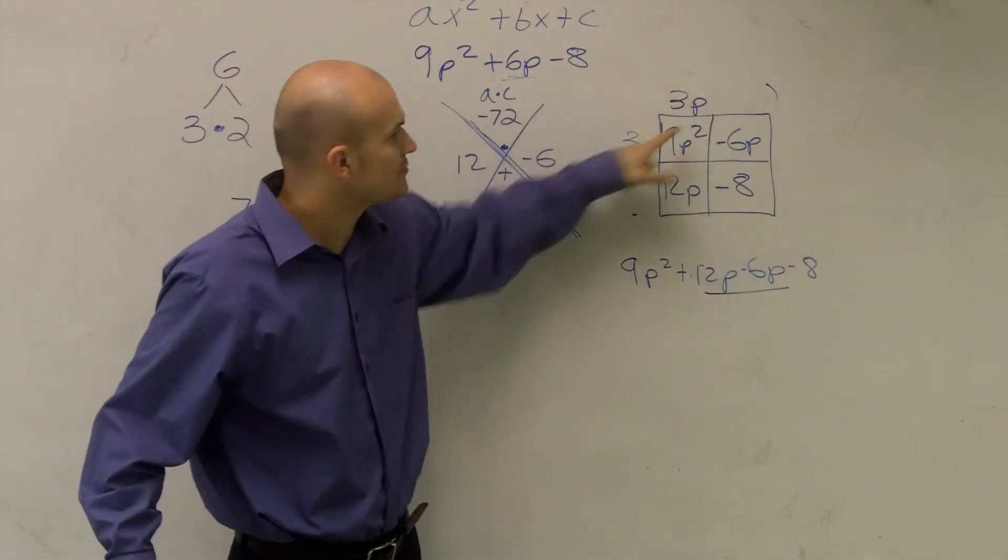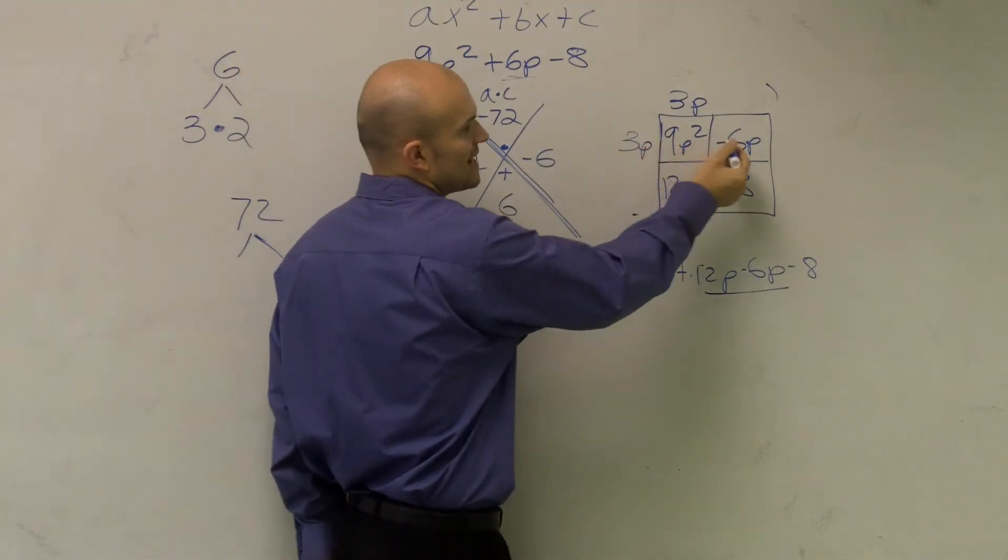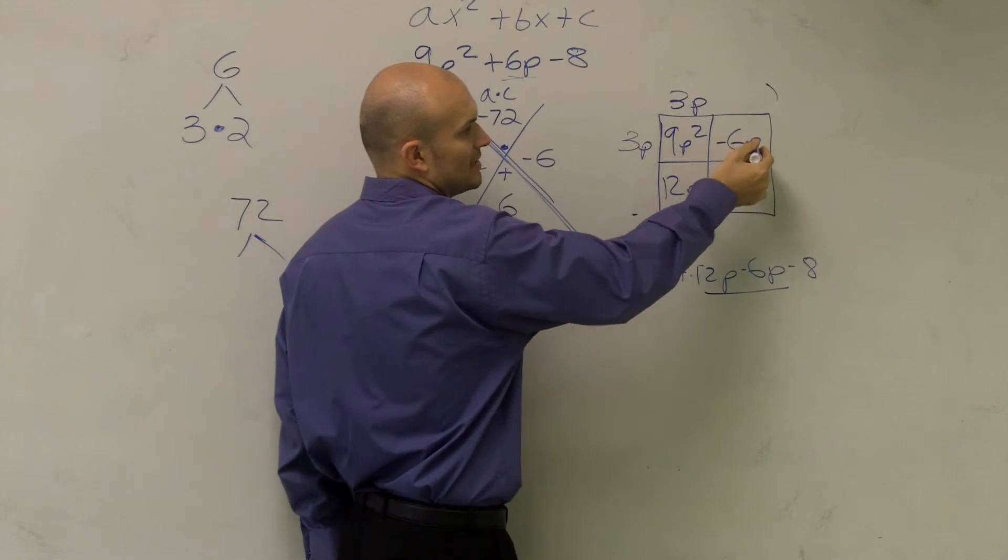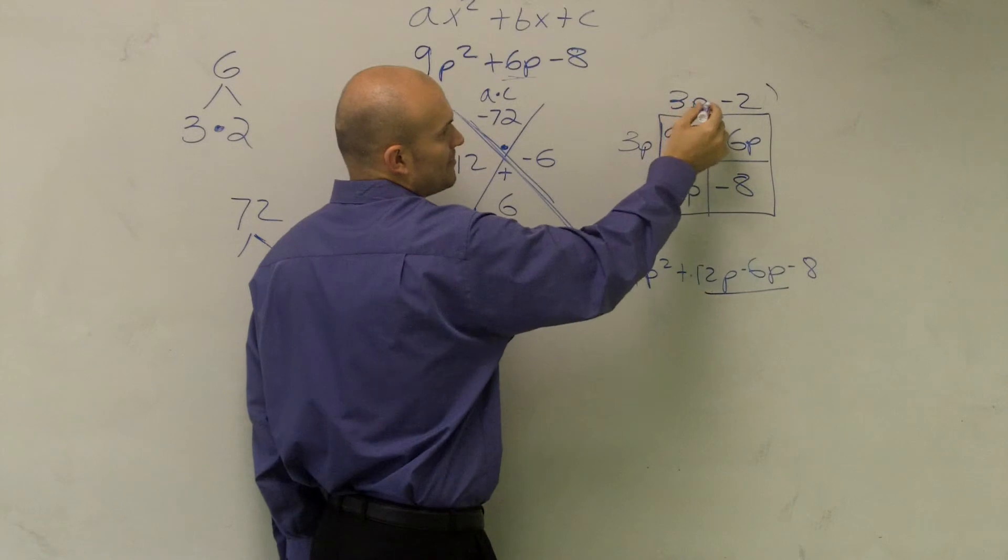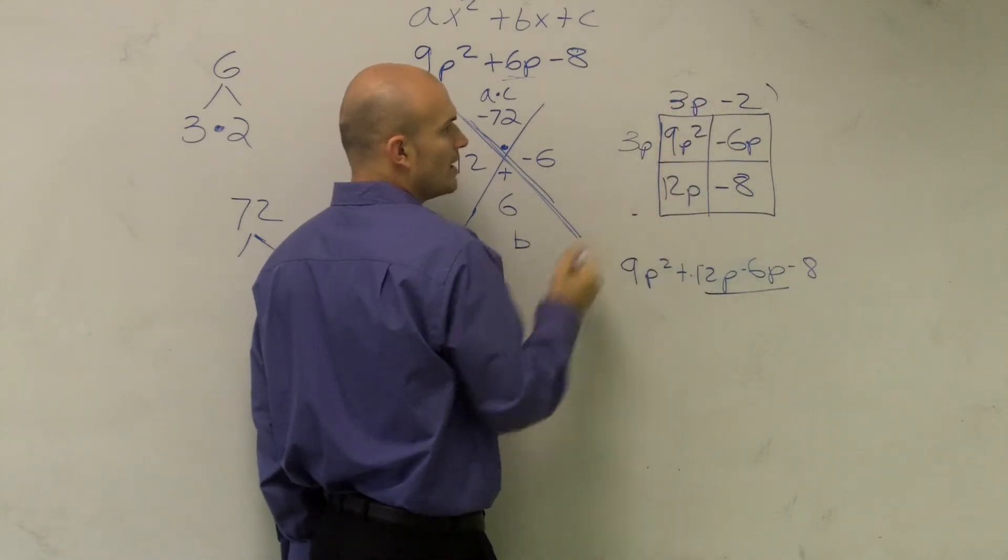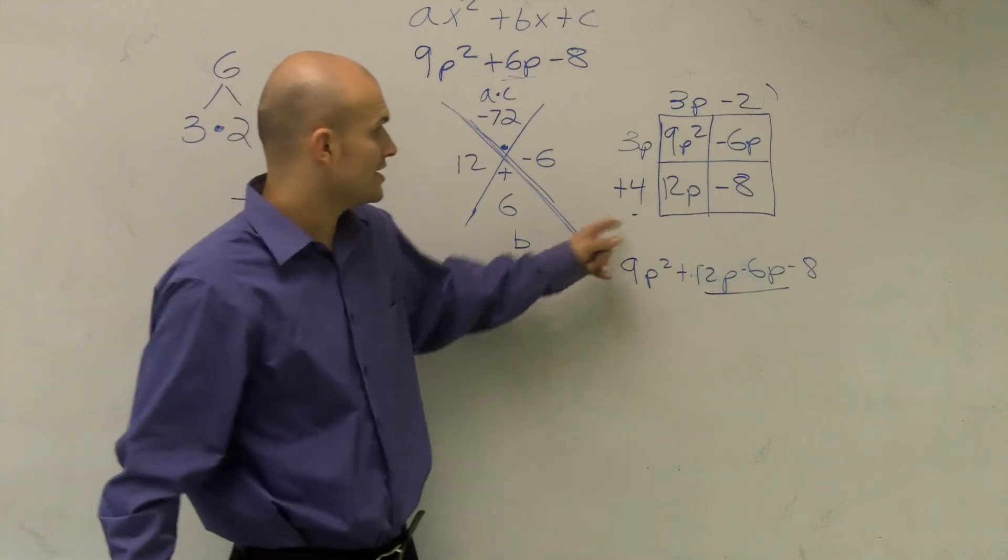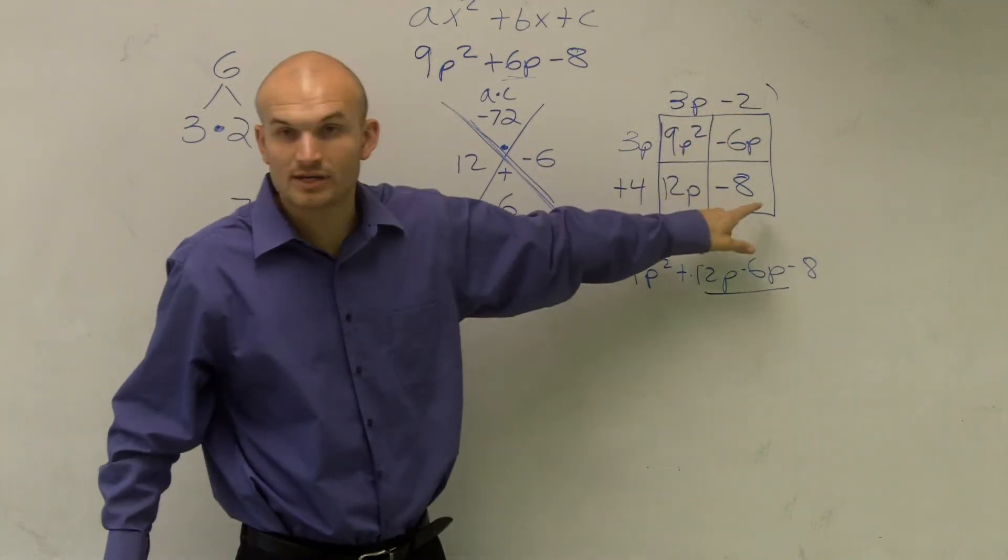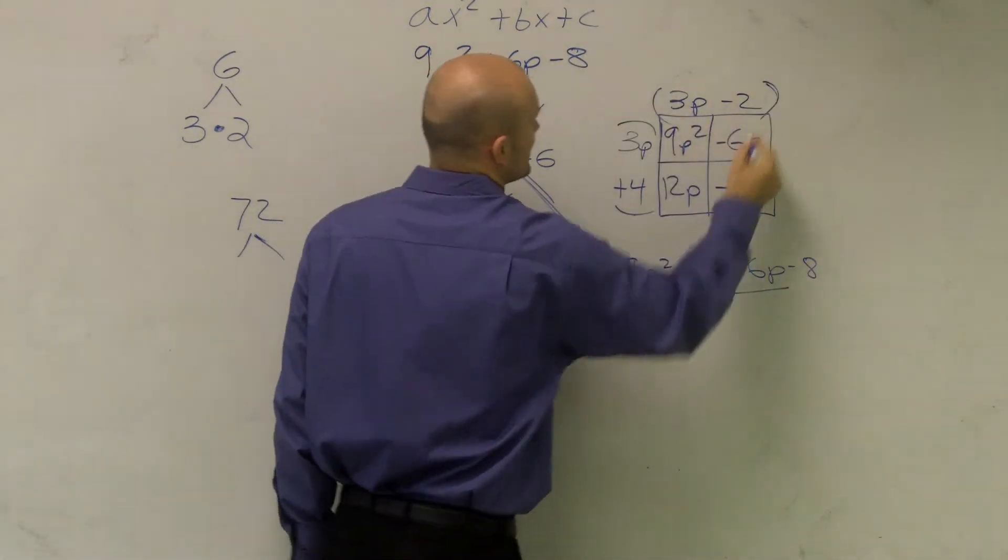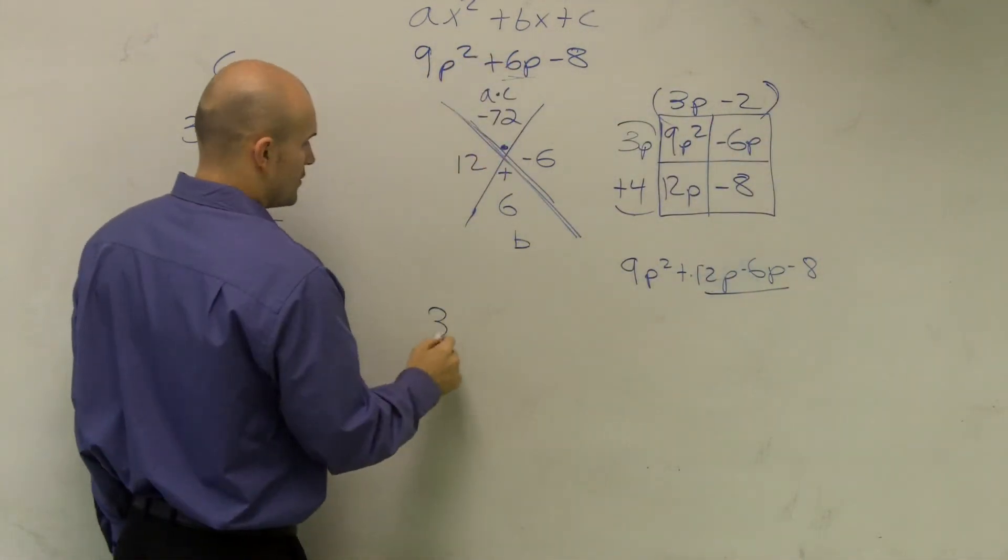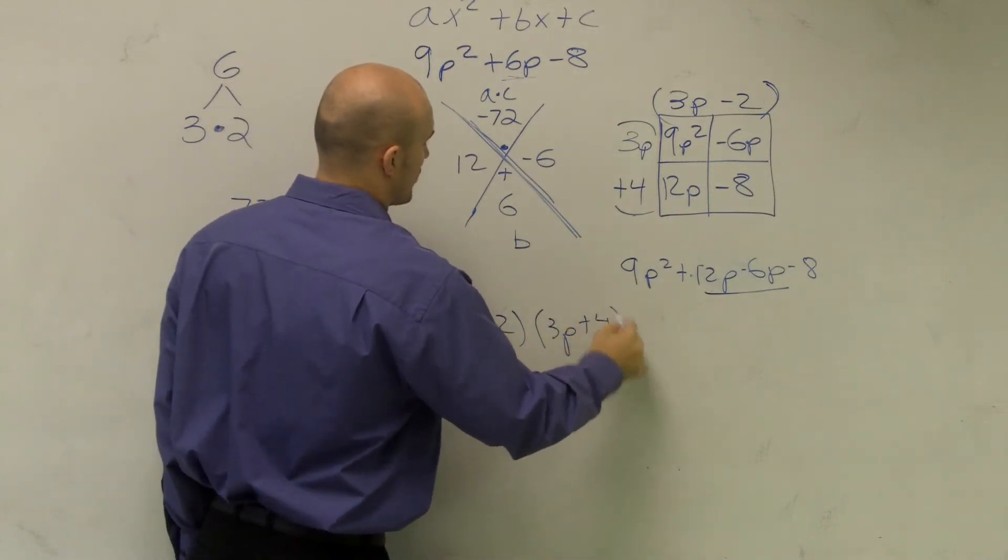So let's check it. Does 3p times 3p give you 9p²? Yes. 3p times what gives me negative 6p? Well, that's going to be a negative 2. Then 3p times what gives me a 12p? And that's a positive 4. Then I check the area of my last box. Does negative 2 times positive 4 give me a negative 8? Yes. So now what I've done is I've created my two monomials: 3p - 2 times 3p + 4.